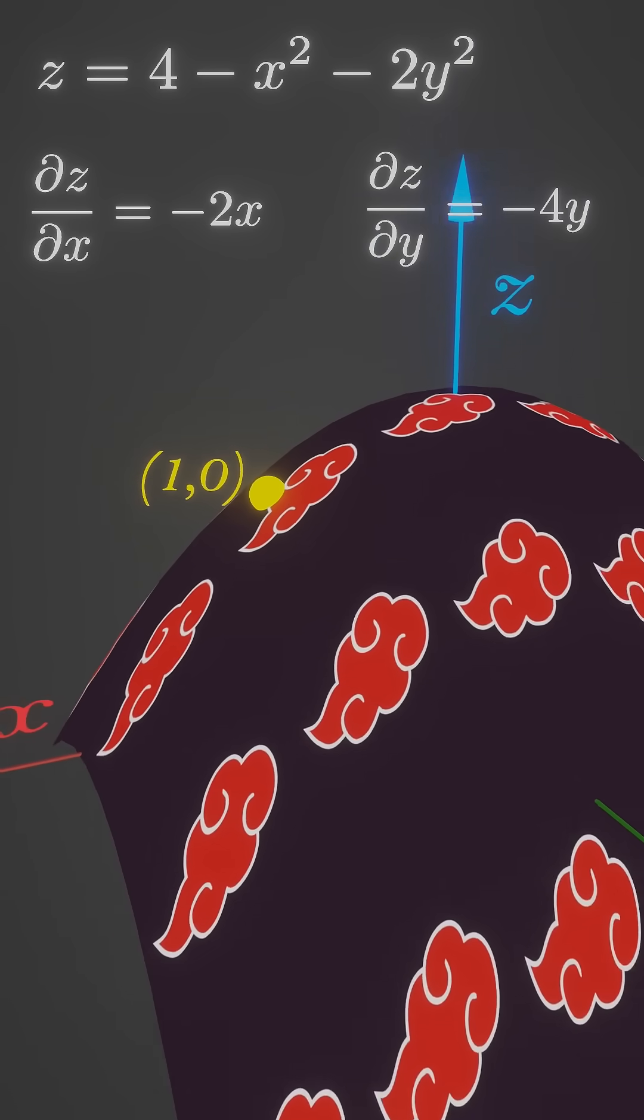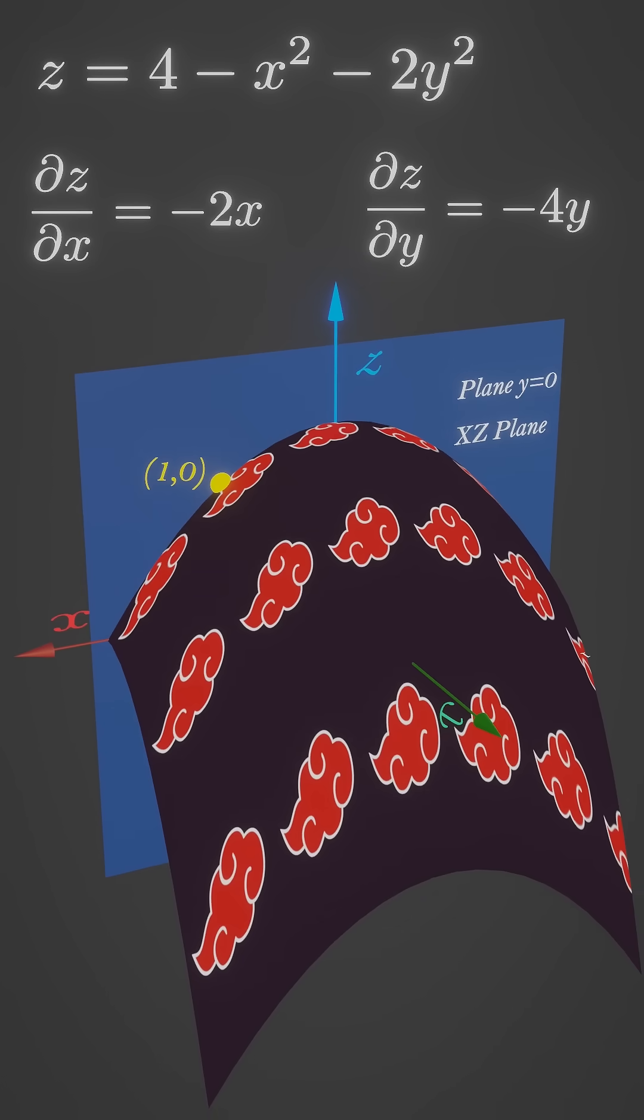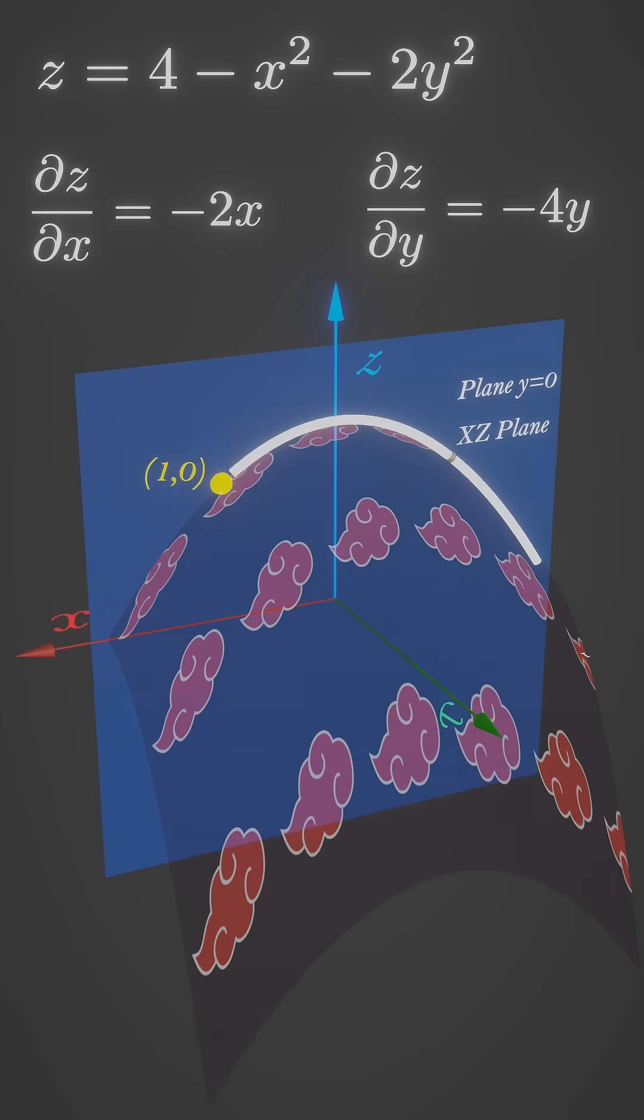At this point cut the surface by vertical plane y equals zero, which is the x, z-plane. Now the plane and the surface creates a curve. Since y equals zero is fixed, the partial derivative with respect to x is the slope of this white curve.